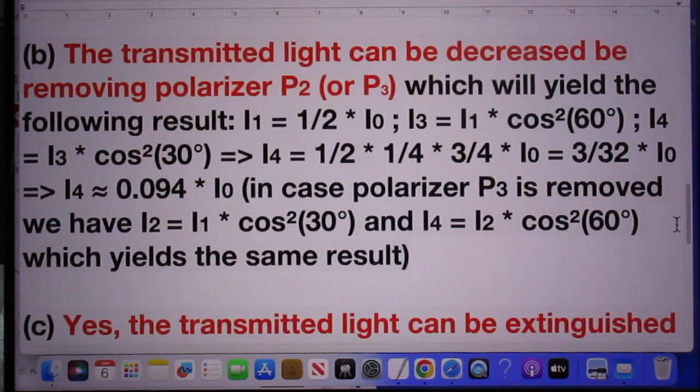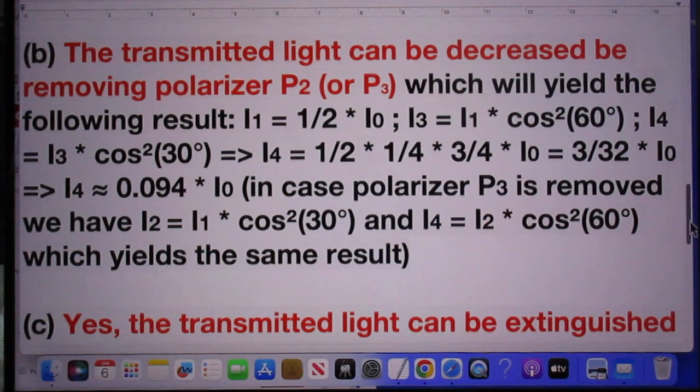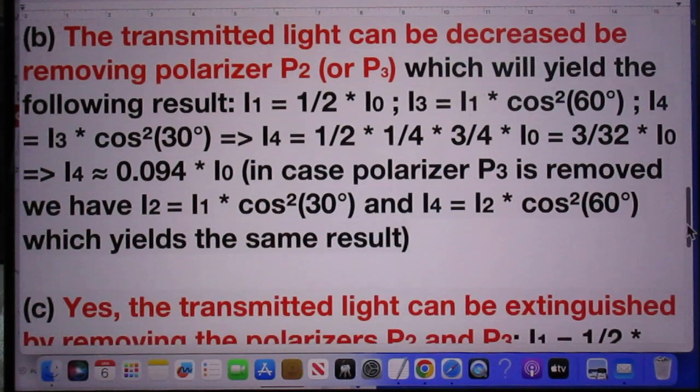The transmitted light can be decreased by removing polarizers P2 or P3, and here he shows then what the results will be. So he first removes P2, and then independently he removes P3.